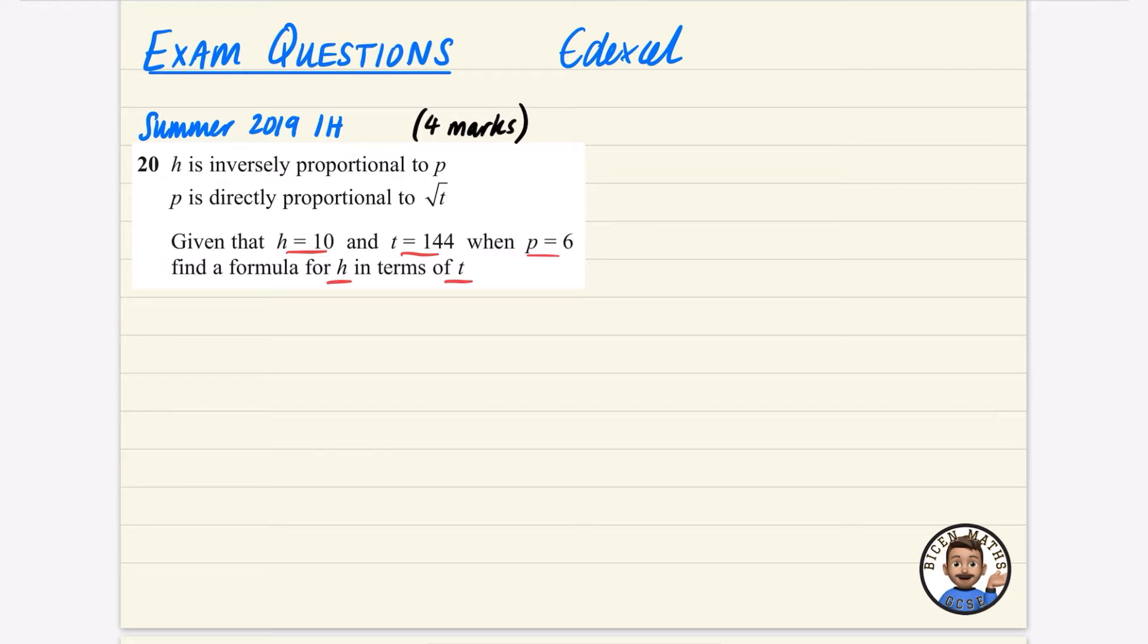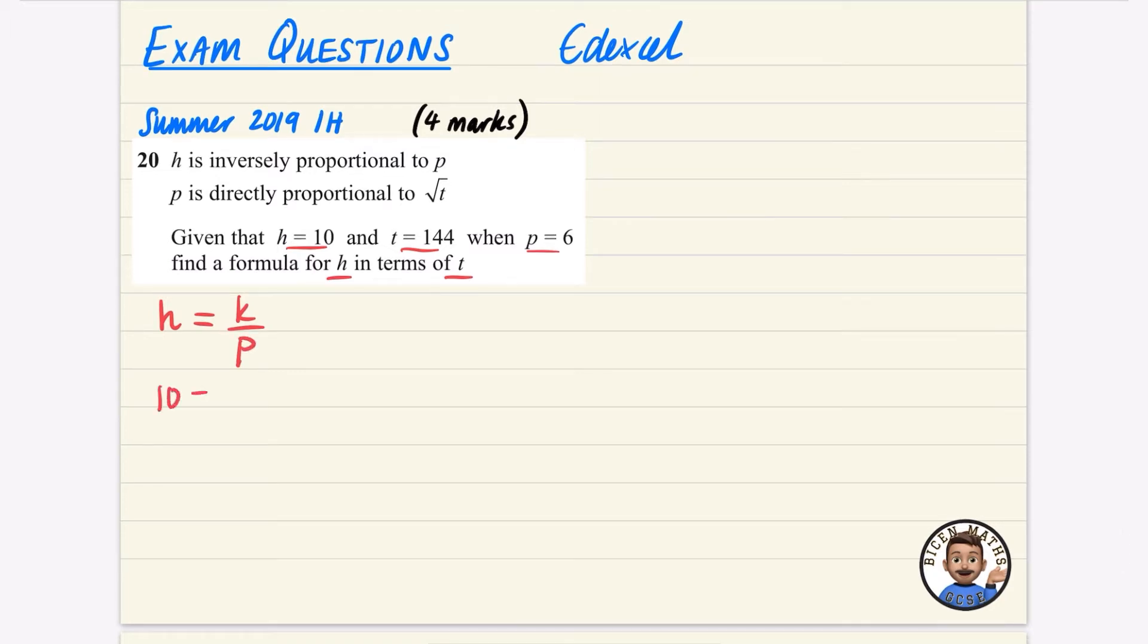So the slow way would be to say, okay, well, H is inversely proportional to P. So H equals K over P. And I'm going to use the information that they've given us. So H is 10, and they've said when P is 6. So that's K over 6, meaning that K is 60. So H is equal to 60 over P. That's that first part dealt with.